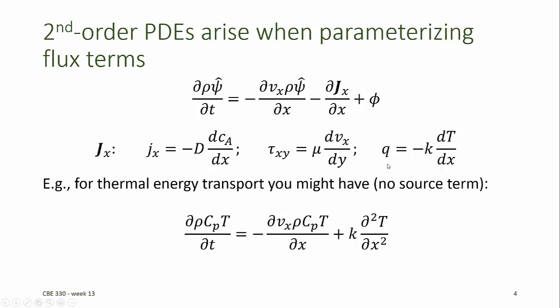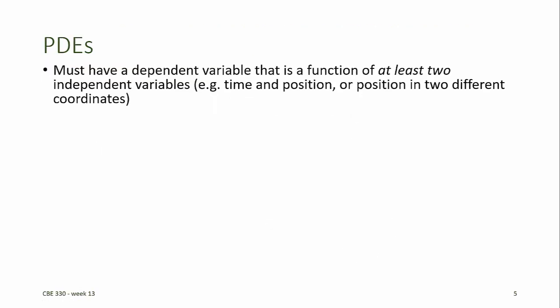Similarly, when modeling heat transfer, the thermal energy flux term, q, might be substituted in for capital J sub x. And the thermal energy flux might be described by Fourier's law of heat conduction, which is a derivative in temperature. Substituting the derivative in temperature would give us a second order PDE.